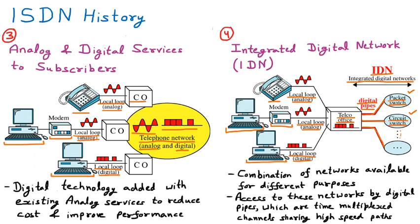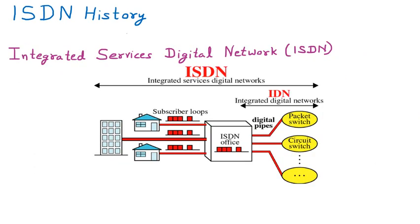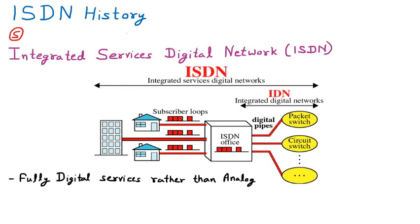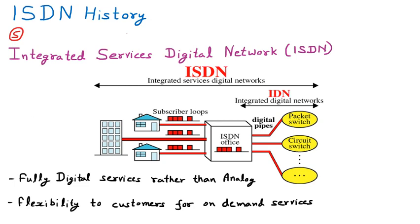The fifth stage is ISDN — Integrated Services Digital Network. After the four previous improvements, ISDN provides fully digital services rather than analog. In ISDN, complete digital technology is used; all analog things are removed and we work on purely digital technology. Another key feature is flexibility — on-demand services for customers. Packet switch and circuit switch networks are available and can be given to customers on demand.